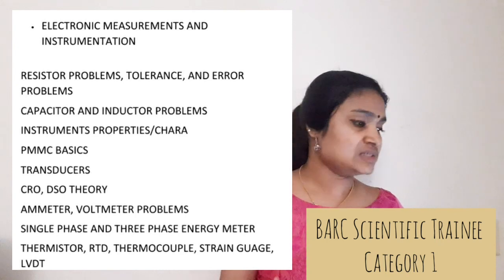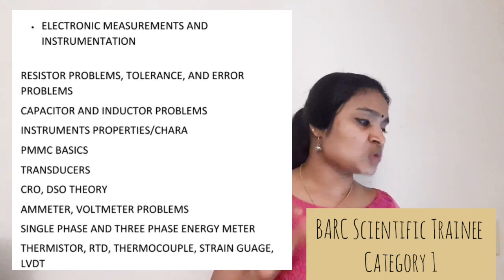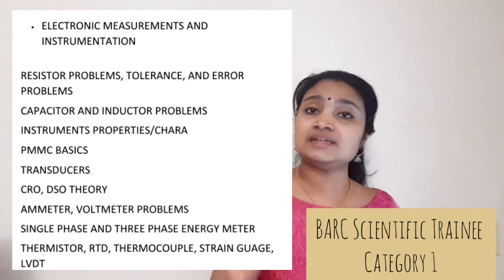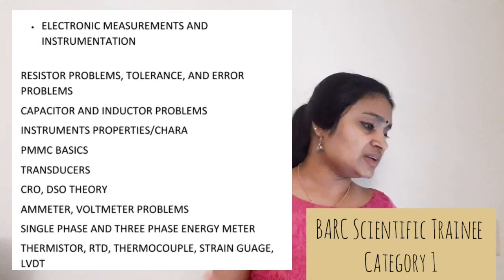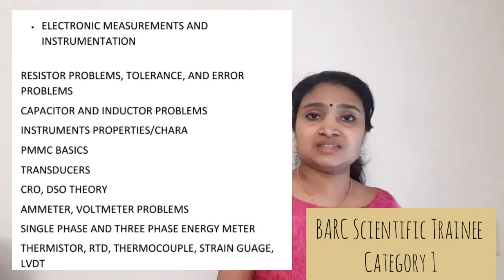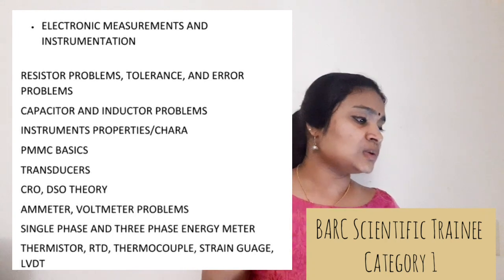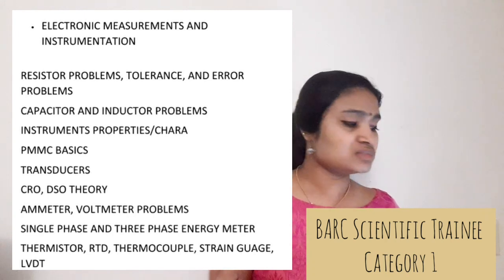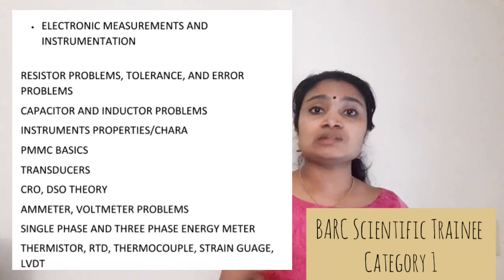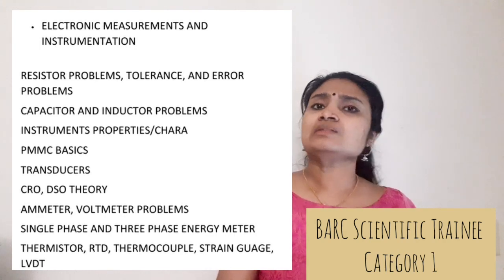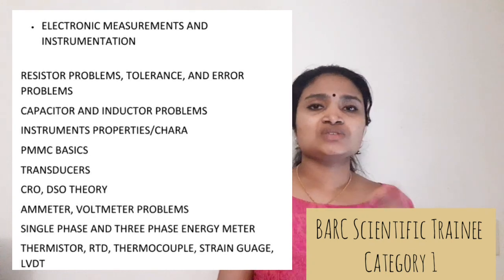Electronic Measurement and Instrumentation is a very important subject for diploma syllabus. Cover resistor problems, tolerance-related problems, error equations, capacitor and inductor problems, instrument properties, PMMC basics and problems, transducers and their working principles, CRO and DSO theory, ammeter and voltmeter problems, single-phase and three-phase energy meters, thermistor, thermocouple, and strain gauge. Mostly theory questions are expected.